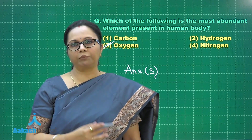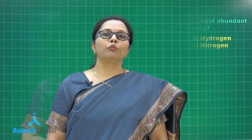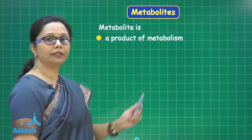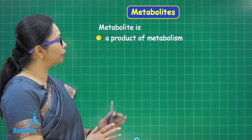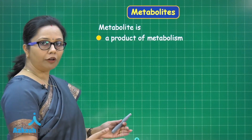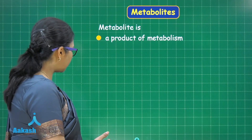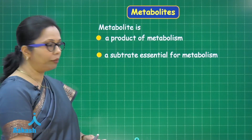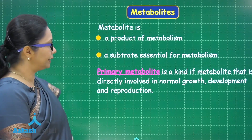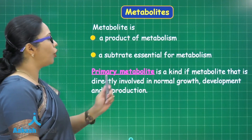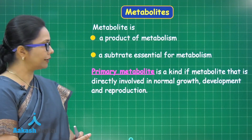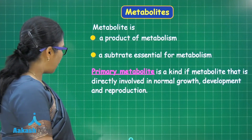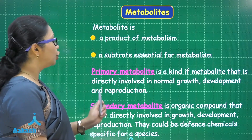Now let's move on to metabolites. A metabolite could be a product of metabolism. Metabolism is the sum total of all chemical reactions taking place in the body — that is, anabolism and catabolism. For example, sugars formed during photosynthesis are metabolites, and glucose utilized by cells to generate ATP is also a metabolite. All metabolites can be categorized as primary and secondary. Primary metabolites are directly involved in the normal growth, development, and reproduction of the organism — for example, glucose is a primary metabolite, as cells would be deprived of energy without it.